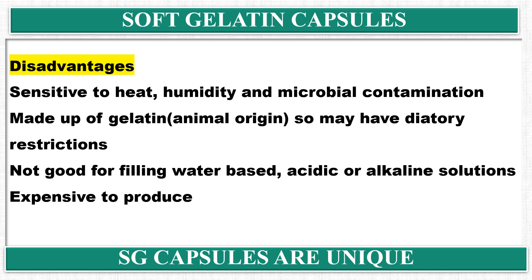Considering the disadvantages, soft gelatin capsules have sensitivity to heat, humidity, and microbial contamination. They are made up of gelatin, which is of animal origin, so some people may have dietary restrictions — vegetarians do not prefer these capsules as gelatin is an animal-derived protein. They are also not suitable for filling water-based acidic or alkaline solutions; generally the solution pH should be near neutral. Additionally, these capsules are somewhat expensive to produce.